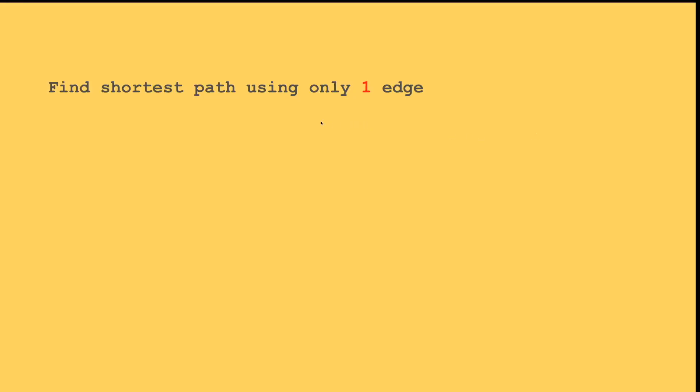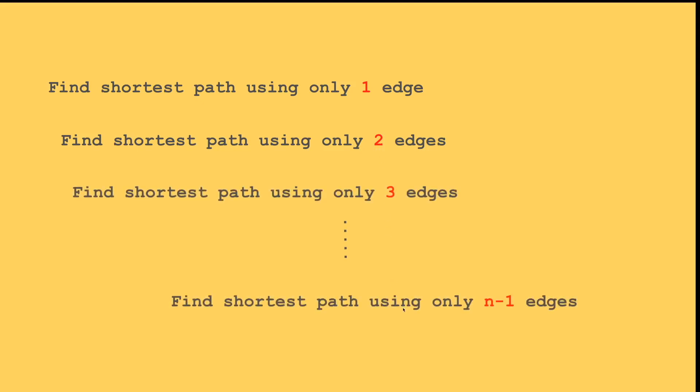The main insight of this algorithm is that first you want to find the shortest path using only one edge. That means you're allowed to use only one edge and you find the shortest path from source to all other nodes. We don't specify which one edge that is, we just say the number of edges have to be one. Then the next step we improve on this by allowing you to use two edges. Again we don't specify which two edges, all we specify is that the number of edges that you're allowed to use is two. Then you improve this over and over until finally you're allowed to use n minus one edges and this will give you the shortest path from source to all other nodes in the graph.